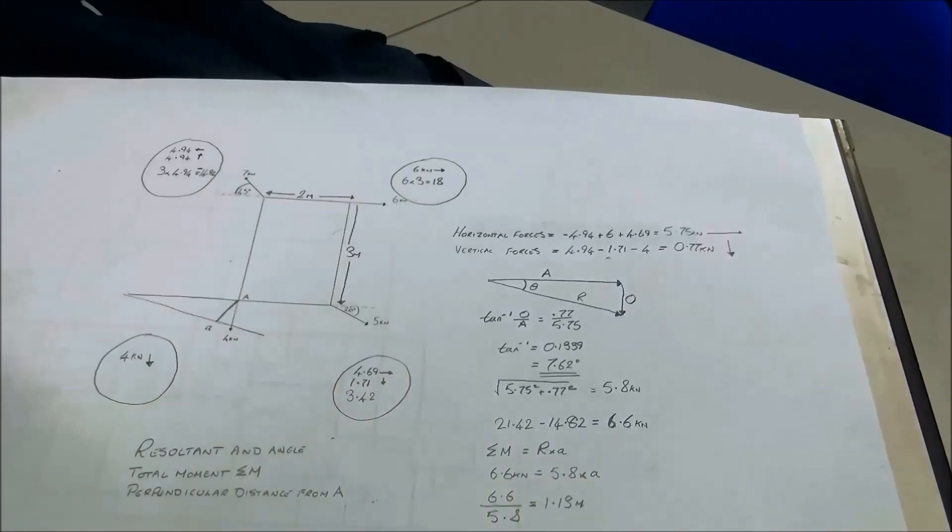And that's how you do non-concurrent forces in 2D systems. I put little bubbles in each corner for each force point and work them out that way — other people use tables. Any way you want to do it is fine, as long as you have some type of logical system to follow. Hope that helped, and I'm always open for any questions.